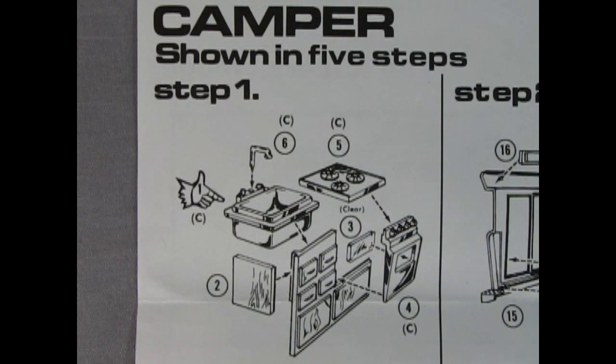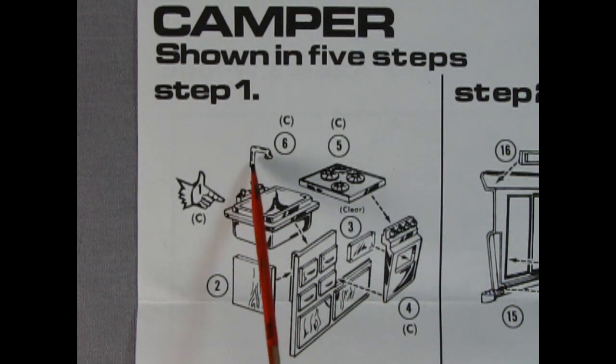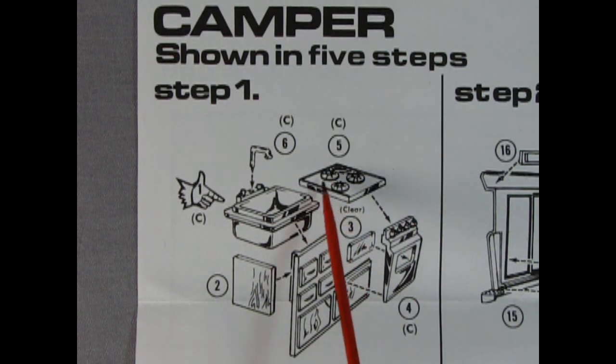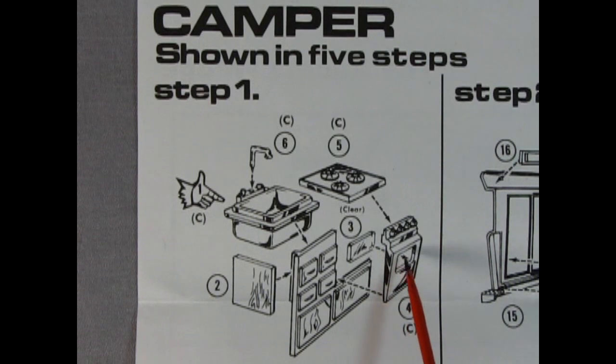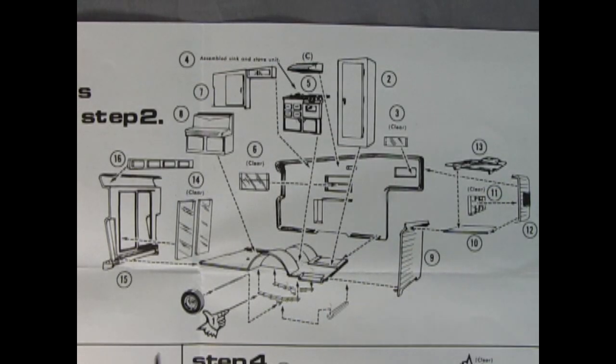Here we have our camper shown in five steps. The first of course is to assemble our kitchen. Now look at this great kitchen sink you get in here with the faucet on the top, the three elements for our stove, the burner up top, and then there's the oven down below. Then we've got all the little silverware drawers and drawers for dishes and other cool things. Really awesome looking.